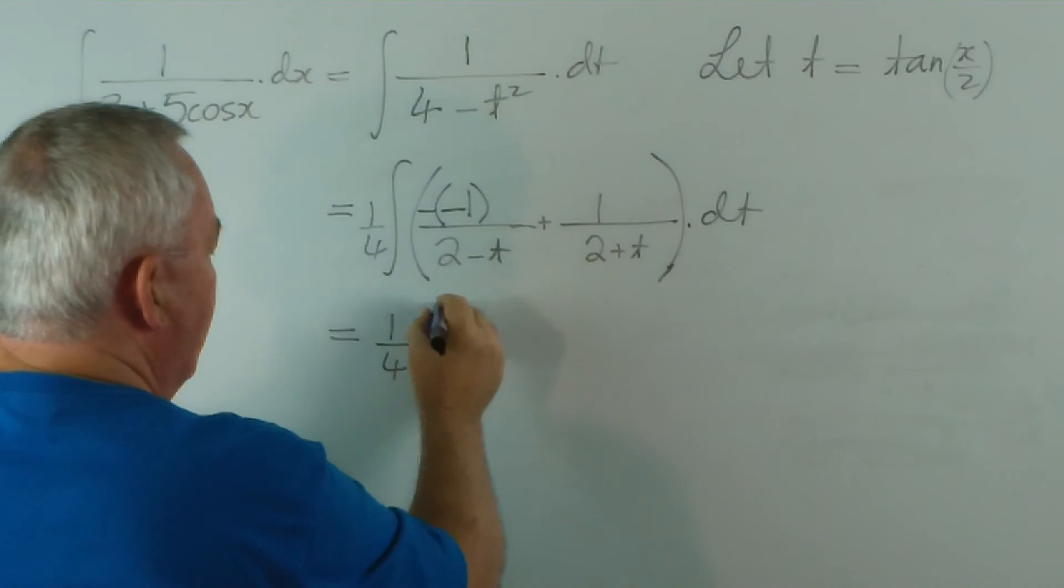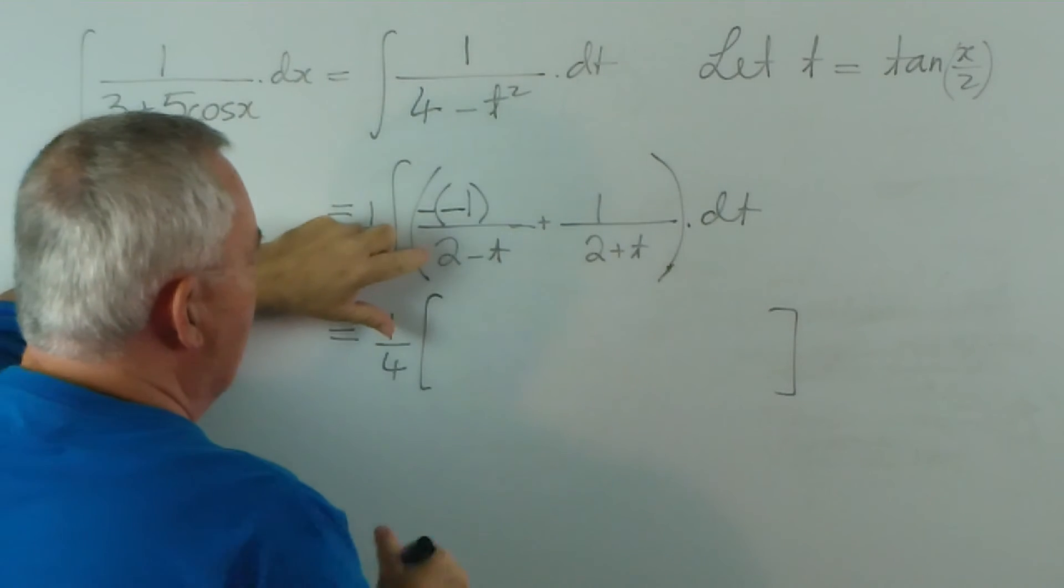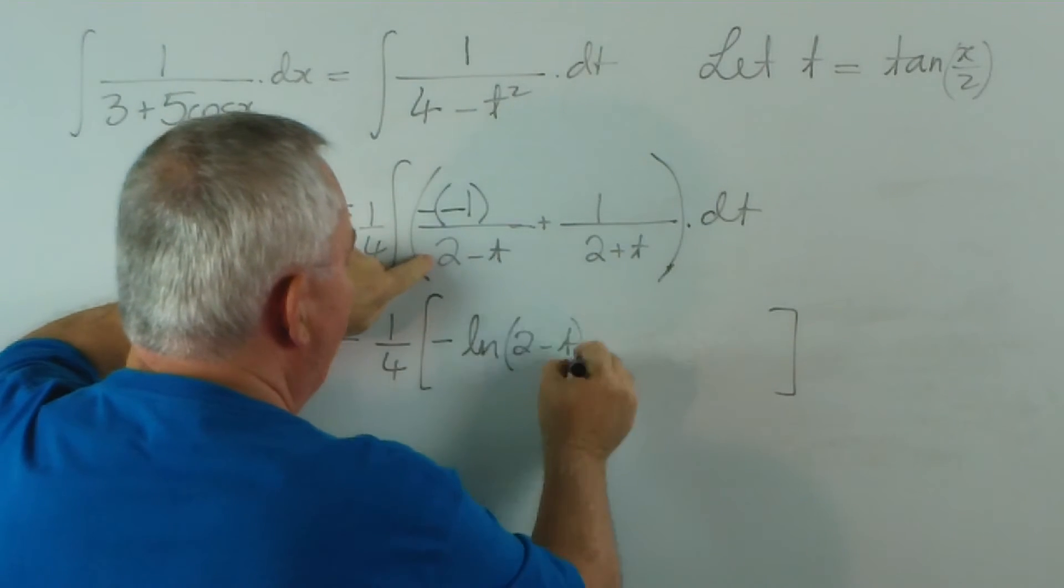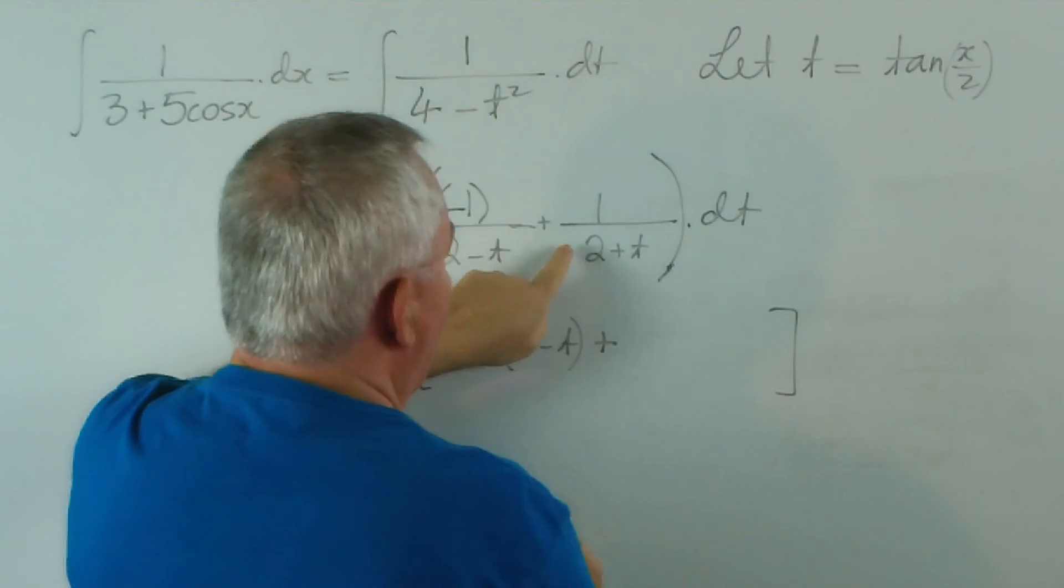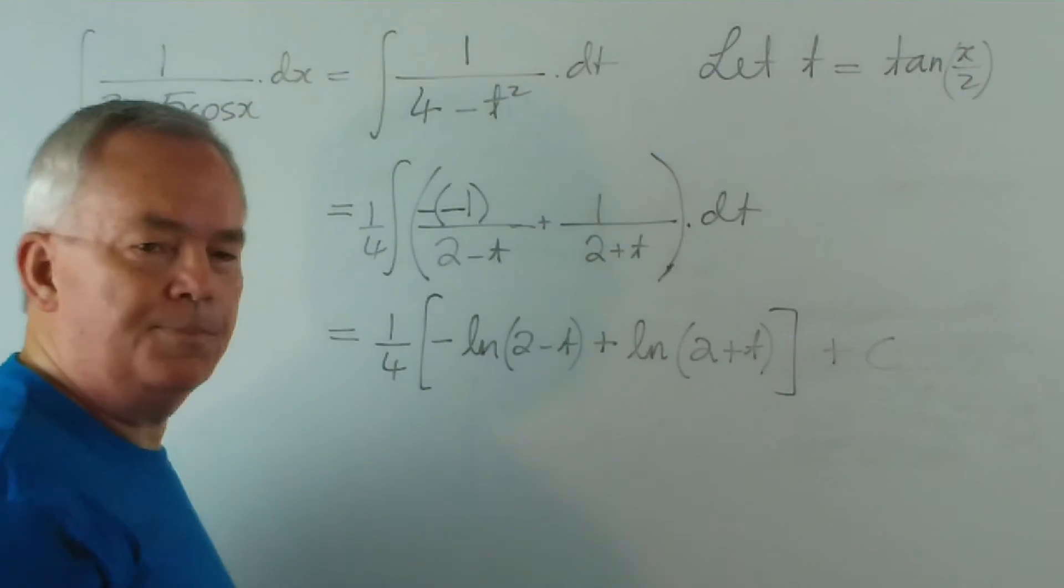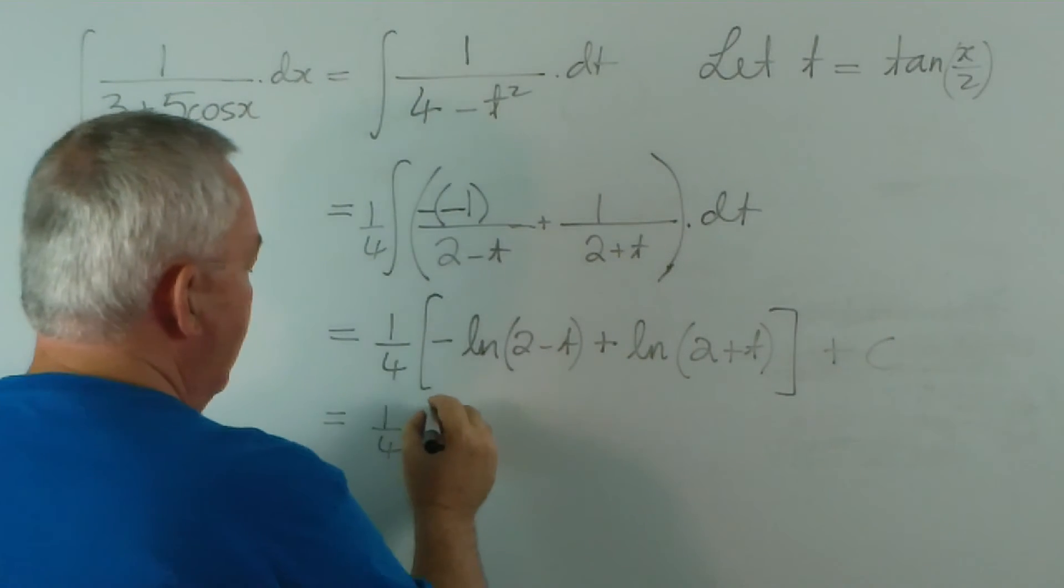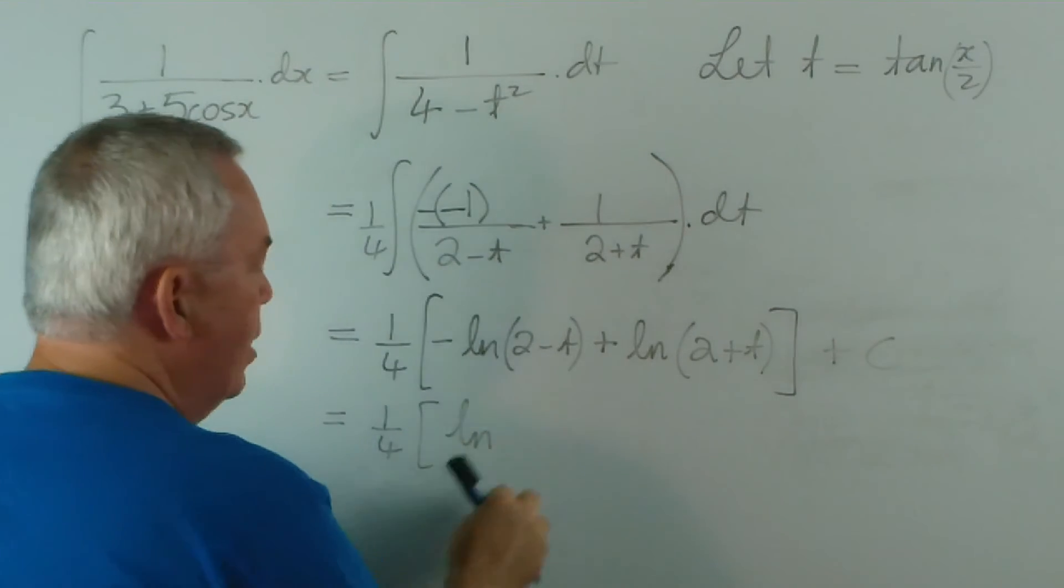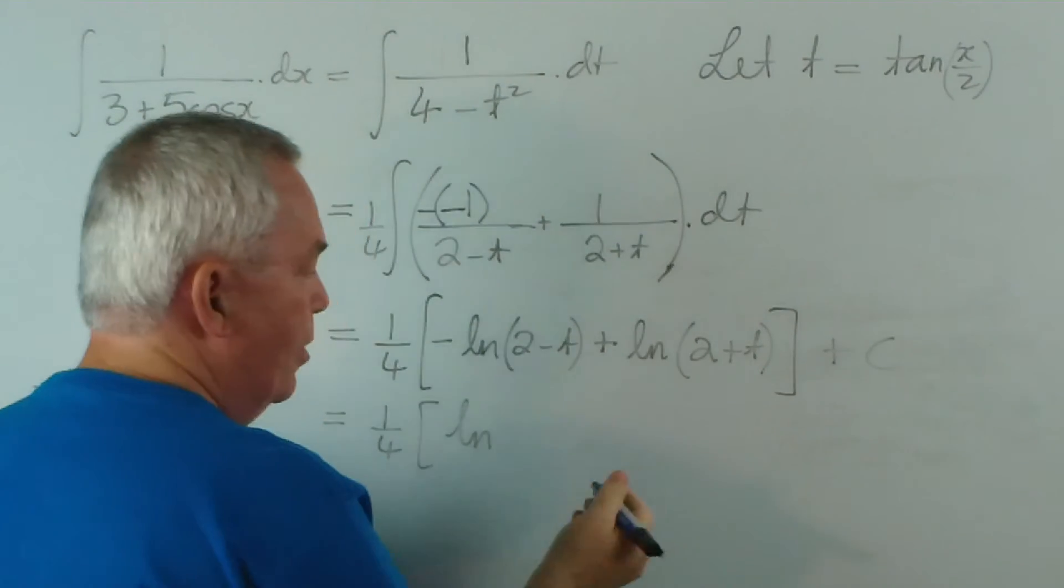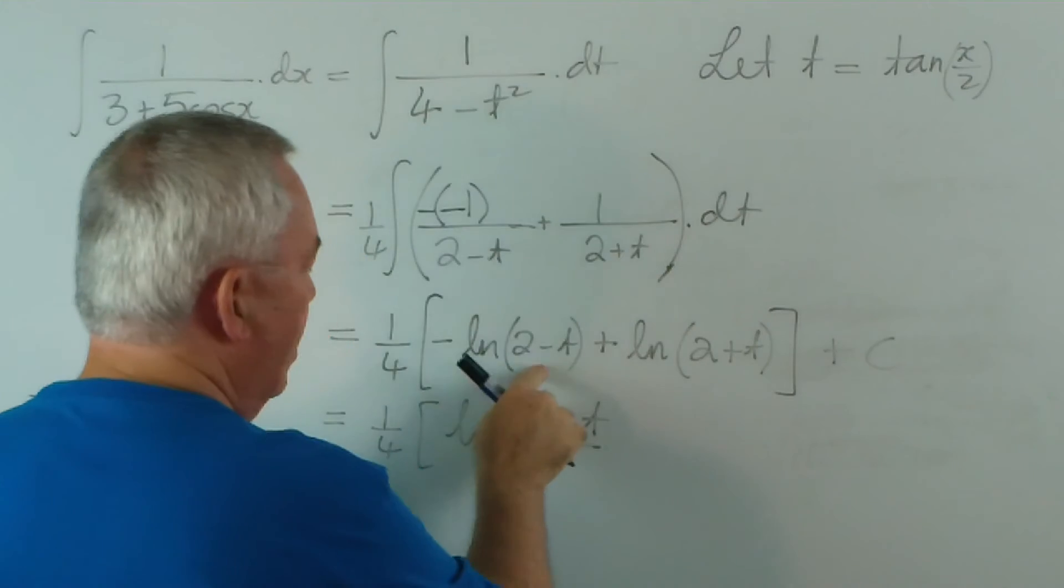So, integrating, I'm going to leave a quarter out the front. Integrating this is going to give me minus the natural logarithm of 2 minus t, plus the natural logarithm of 2 plus t, plus a constant, of course. Now, this will be 1 quarter times the logarithm. Notice we have a difference between logarithms here. We have this logarithm minus this logarithm. That means that we have a division taking place. So it's a logarithm of 2 plus t over 2 minus t.